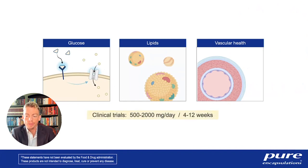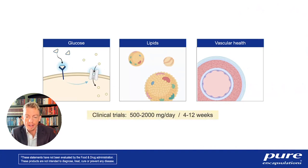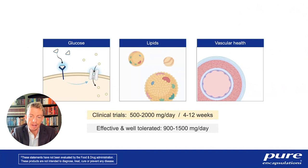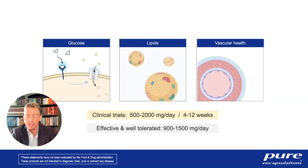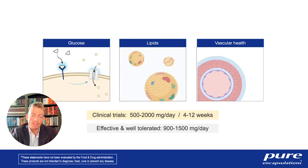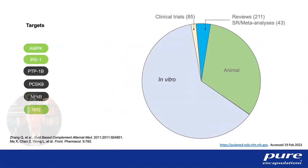To summarize the top three evidence-based indications: clinical trials have administered 500 to 2,000 milligrams per day for four to 12 weeks. The safe, effective, and well-tolerated dose range is 900 to 1,500 milligrams per day. With enhanced bioavailable forms like phytosomes, you might be able to achieve efficacy at a lower dose.